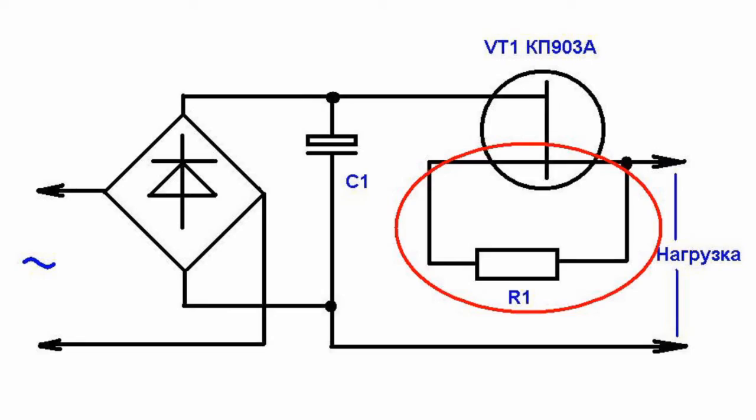If a short circuit occurs, current flowing through the rectifier will drastically increase. The transistor will limit the current to 0.5 A regardless of the voltage drop. In this case, the output voltage will become equal to zero, and the voltage drop will occur across the field-effect transistor.